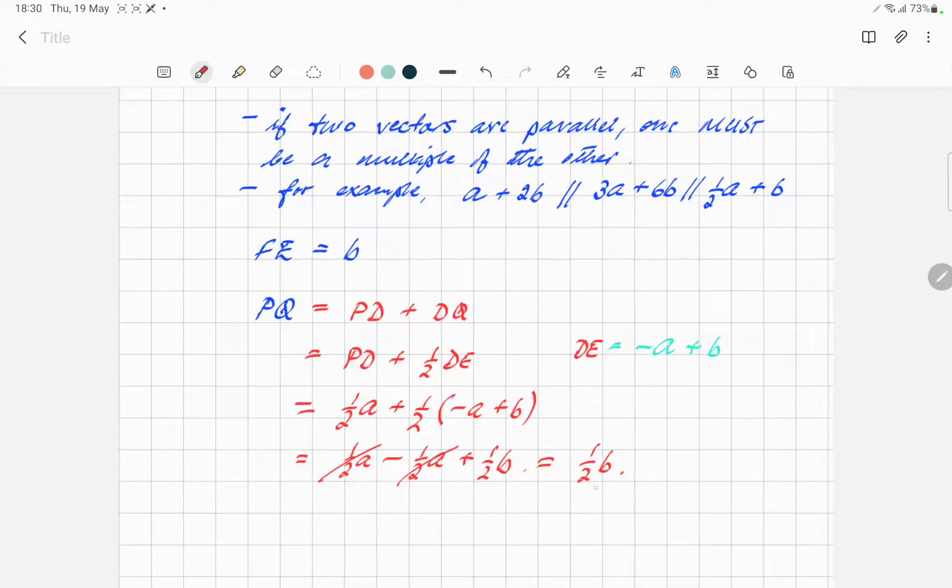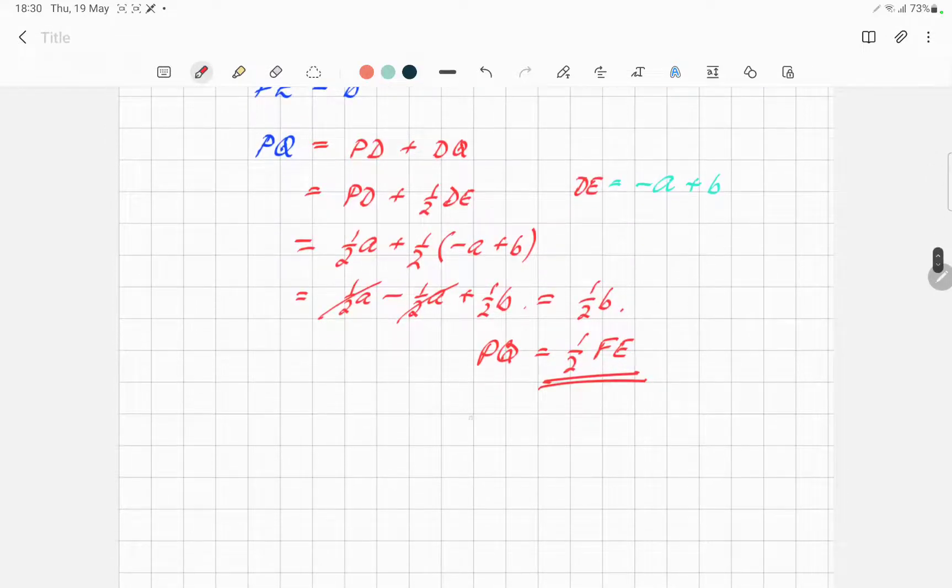Half B. Half B, which is effectively half of F to E. So therefore, PQ is half of FE. So one is a multiple of the other. And in this case, the multiple is either half this way or two that way, whichever way you look at it. And therefore, they are parallel.